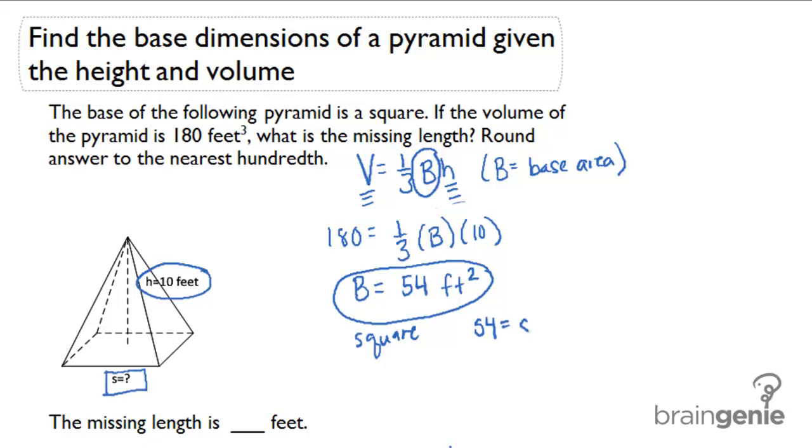S is just going to be 54 equals S squared. So S is the square root of 54, which is approximately 7.348.